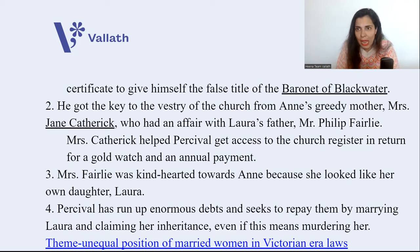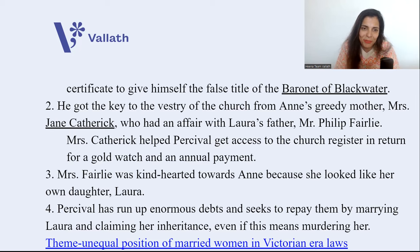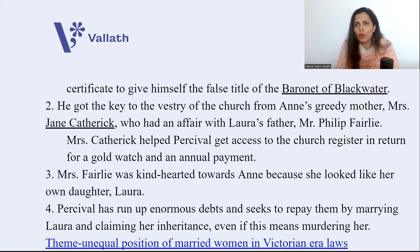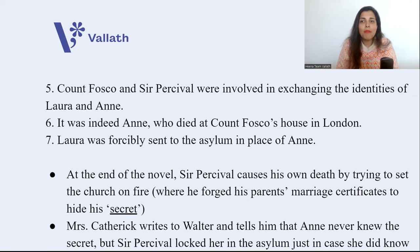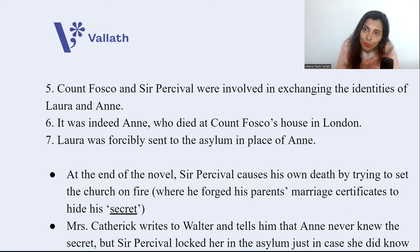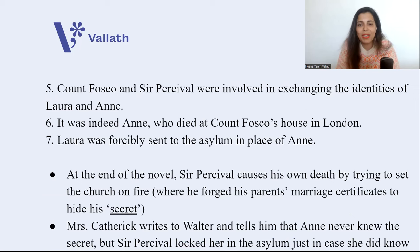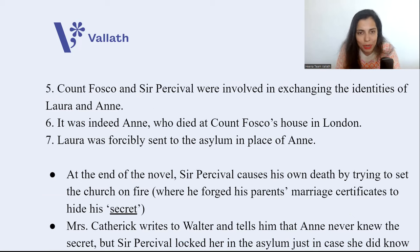Mrs. Fairley was kind-hearted towards Anne because Anne looked just like her own daughter Laura — of course, they share the same father. Percival ran up enormous debts and sought to repay them by marrying Laura and claiming her inheritance, even if this meant murdering her or throwing her in a mental asylum. The theme here is the unequal position of married women in Victorian era laws. Count Fosco and Sir Percival exchanged the identities of Laura and Anne — Anne died at Count Fosco's house, but Laura was taken to the mental asylum and Anne was buried in place of Laura.